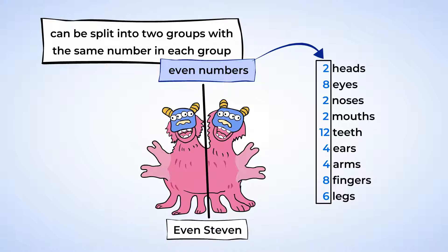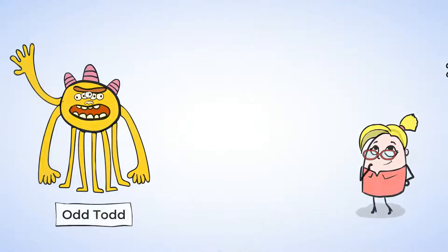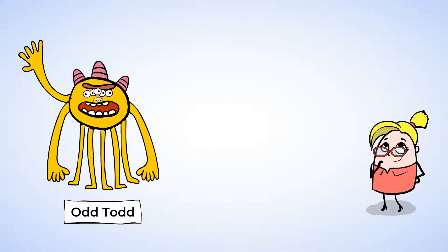I think we should meet Odd Todd. He wants to have his turn. Now, let's see what you notice about him. He has one head, five eyes, one nose, one mouth, nine teeth,